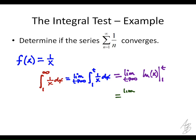Which is going to be the limit as t approaches infinity of the natural log of t minus the natural log of 1. What is the natural log of 1? 0. So I don't need to worry about that. And what is this limit going to approach?